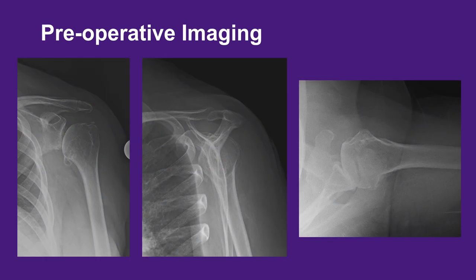Standard radiographs of the left shoulder show advanced glenohumeral arthritis. There is complete loss of joint space and inferior humeral head osteophyte formation. However, the subacromial space is well maintained. The axillary view shows the humeral head to be reasonably well centered on the glenoid with no evidence of significant asymmetric glenoid erosion.